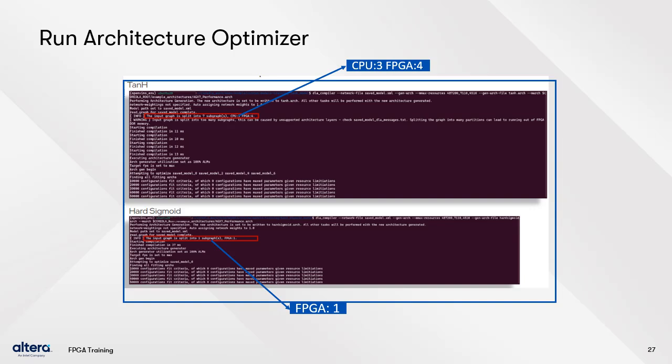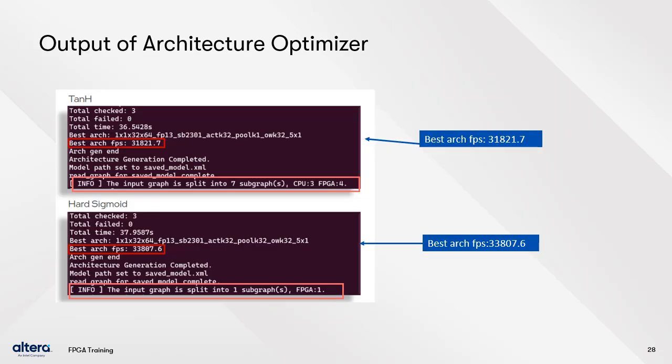Run the architecture optimizer for both TanH and hard sigmoid models. The optimizer looks for the best architecture for the specific graph. For the TanH model, there are seven subgraphs — three on the CPU and four on the FPGA. For the hard sigmoid model, all layers run on the FPGA. The output of the architecture optimizer shows a notable increase in frames per second for the hard sigmoid model, as highlighted in the slide.